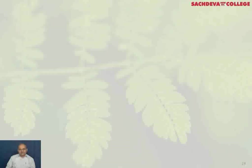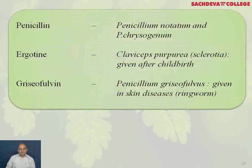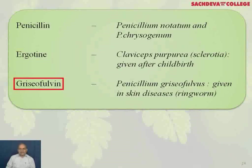Penicillin, from Penicillium notatum and Penicillium chrysogenum, is referred to as the Wonder Drug and was the first antibiotic. Ergotamine is obtained from Claviceps purpurea, from sclerotia, and is usually given after childbirth. Griseofulvin, from Penicillium griseofulvum, is used in skin diseases such as ringworm.